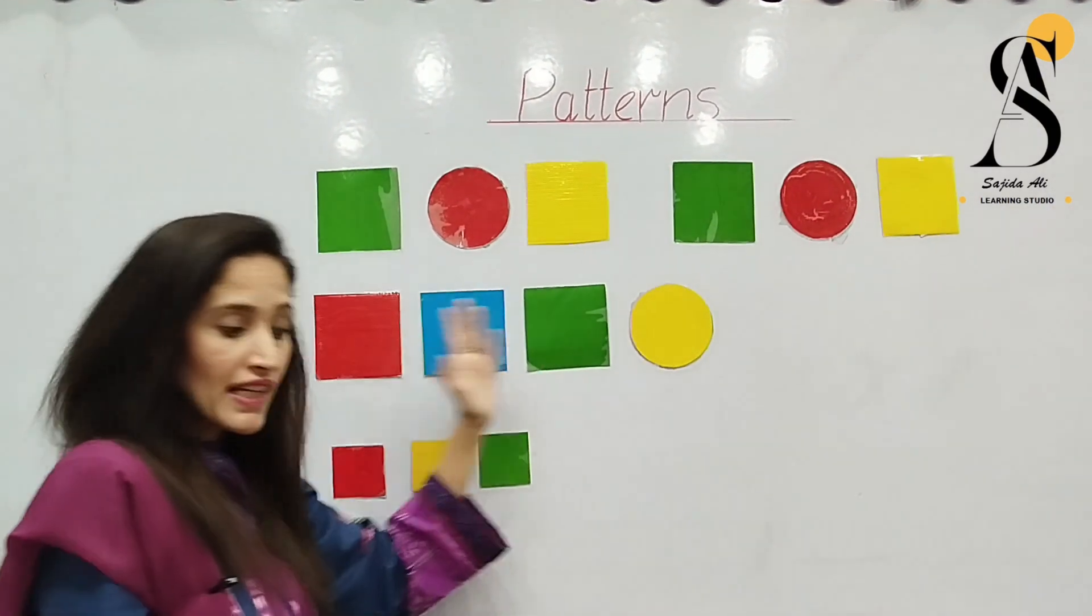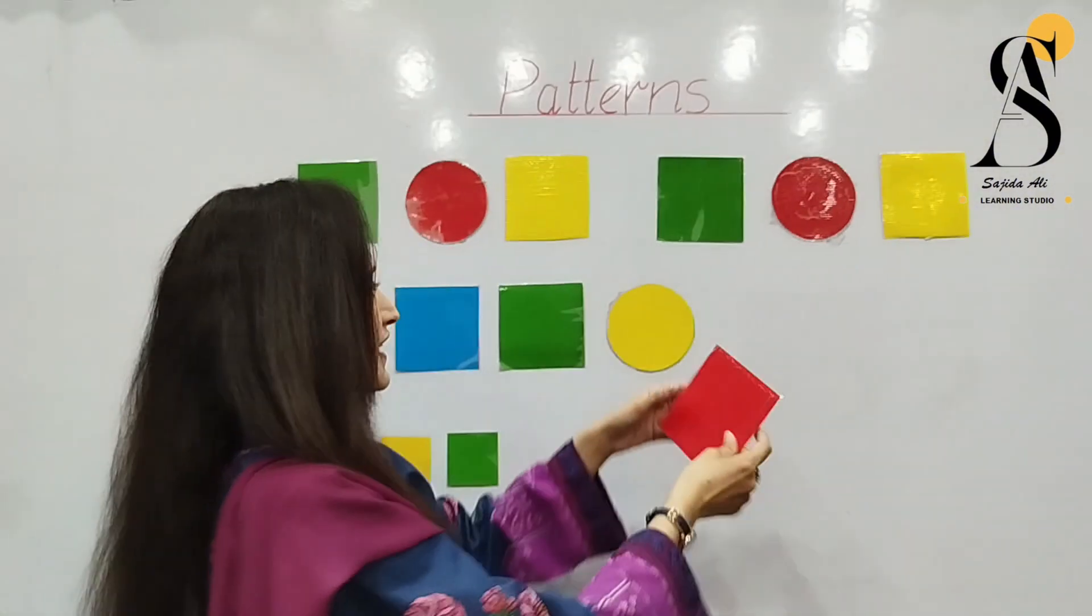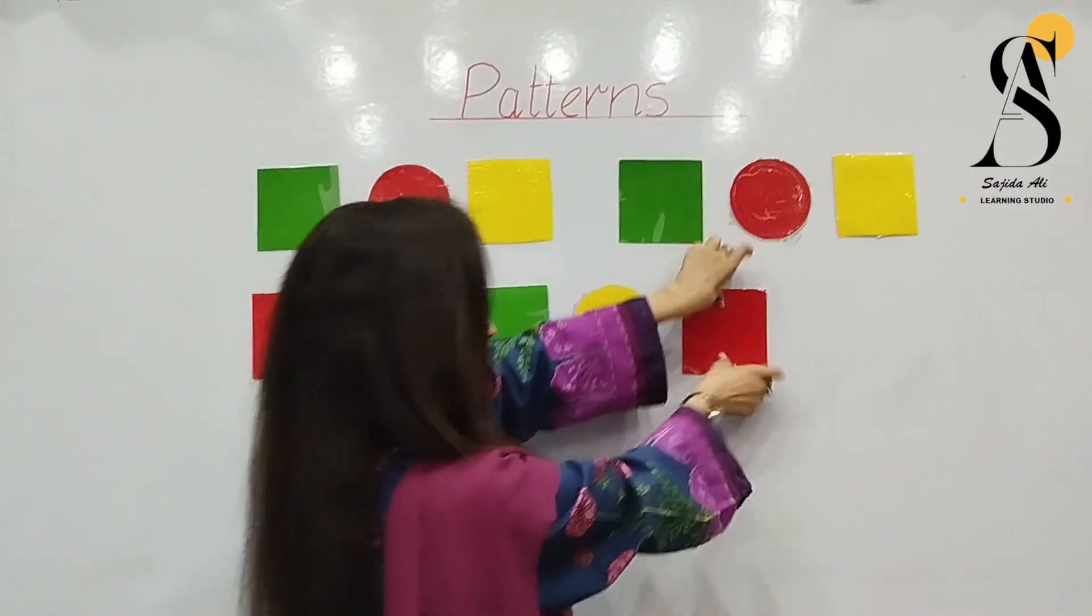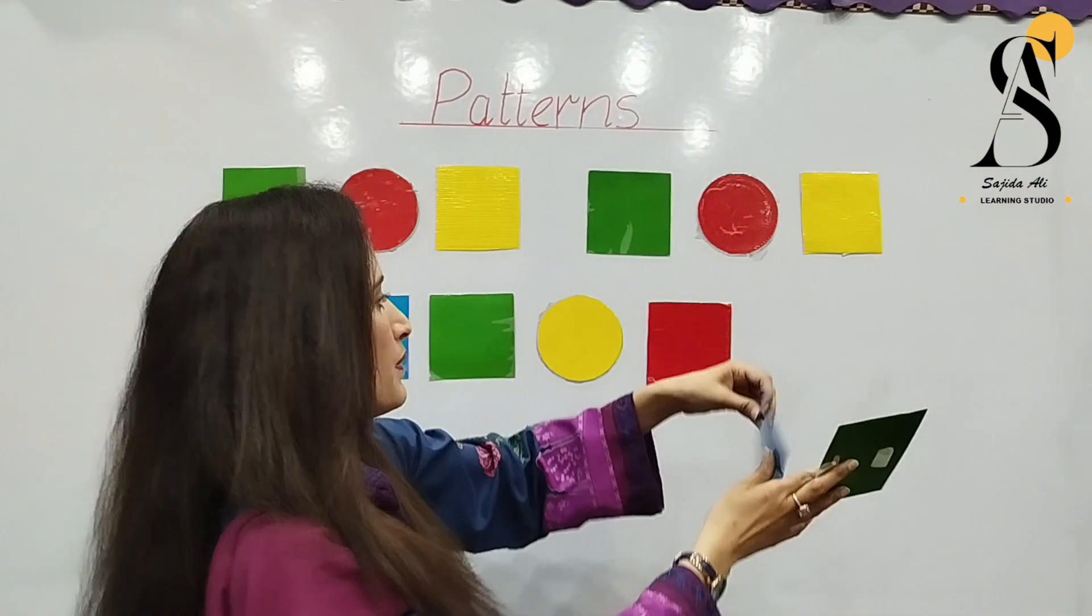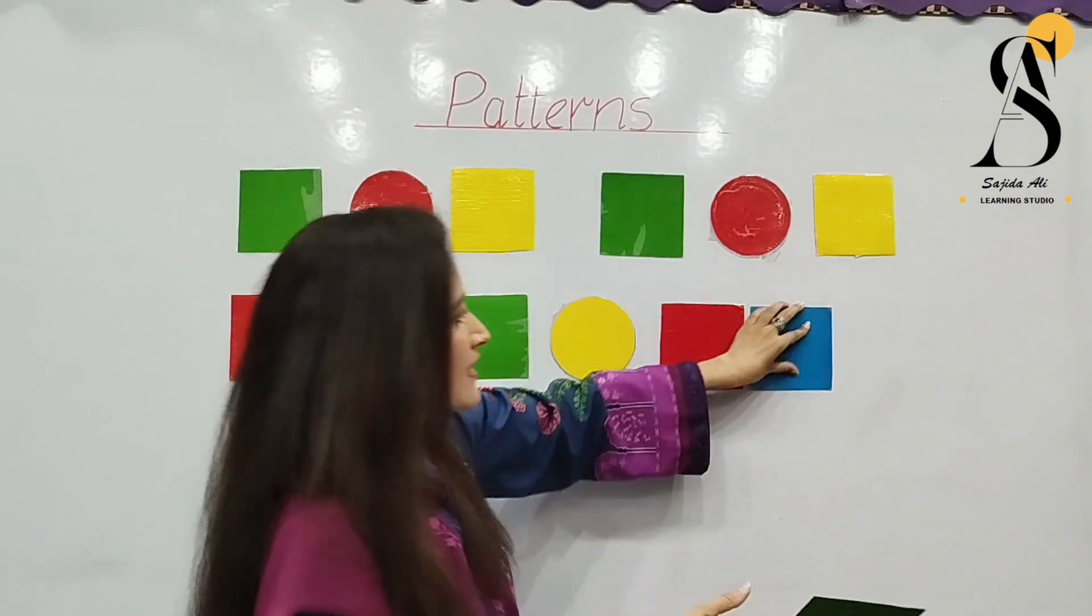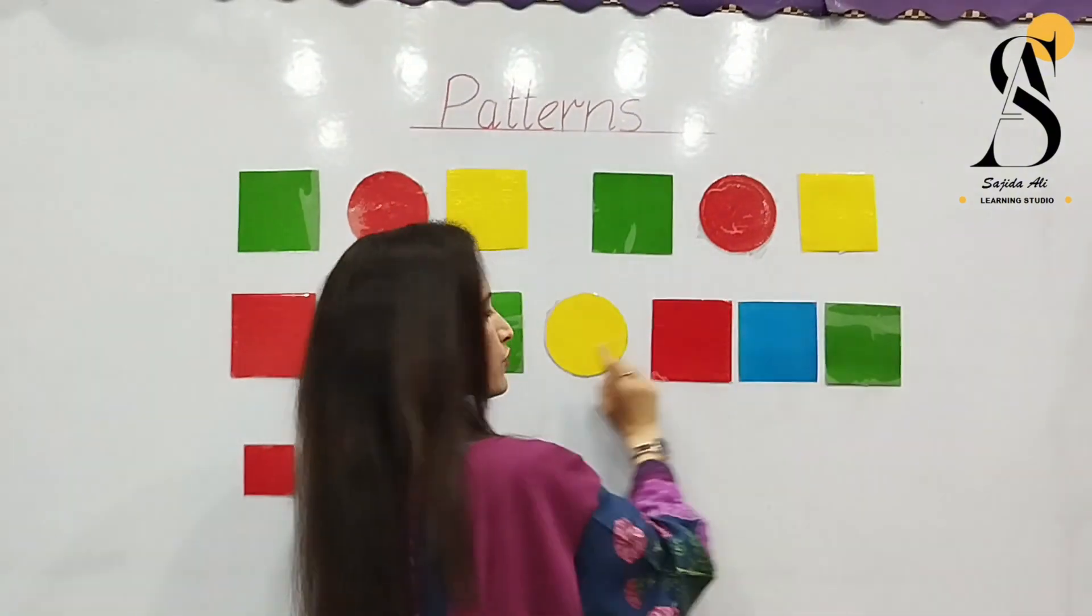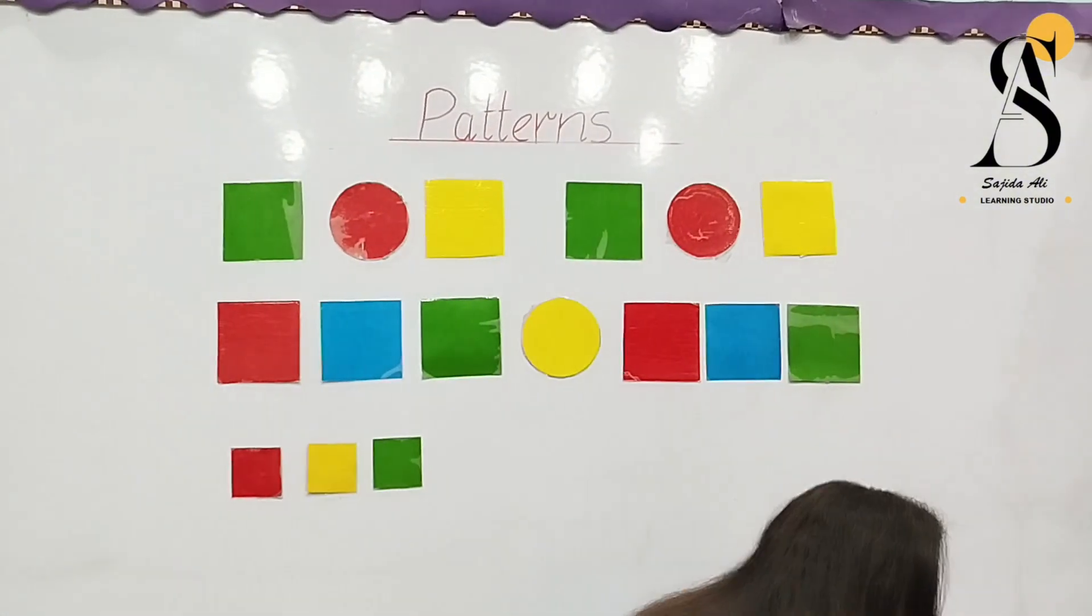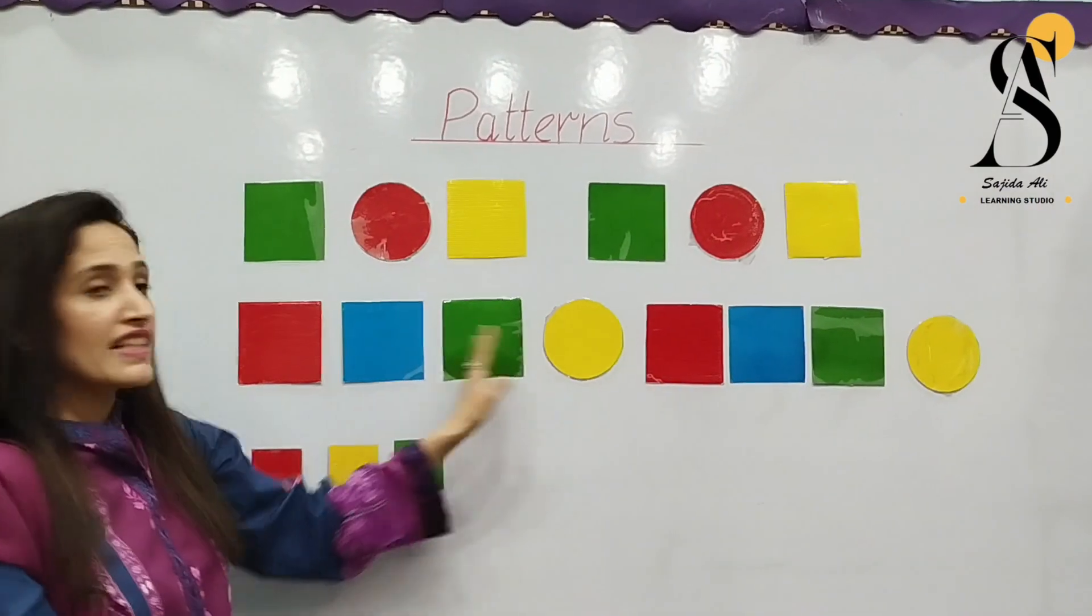Yes, the next will be the red square. And we are going to paste it like this. And then next will be the blue one. And next it's a green. And the last one, it's a yellow circle. So the pattern is complete here.